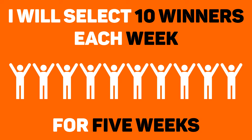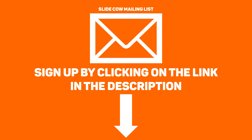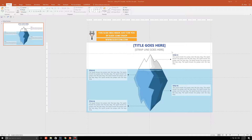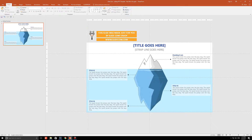I will select 10 lucky winners each week for 5 weeks. So far, 10 people have won the license, which means 40 are left. If you want to win one, all you have to do is sign up to the Slide Cow mailing list using the link below, and I'll even throw in this Tip of the Iceberg slide template for free. If you want to learn more about the Power User add-in, just click on the Info button on the top right.